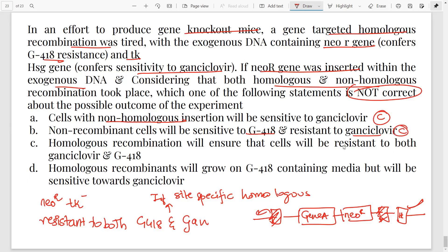Homologous recombination will ensure that cells are resistant to both ganciclovir and G418, which is absolutely correct. We just said it. Finally, the last option says homologous recombinants will grow on G418. Correct. It will have neomycin-R, but will be sensitive to ganciclovir. Why? It should be resistant, right? Because it doesn't have the TK gene. But definitely option D is the incorrect statement and our answer.